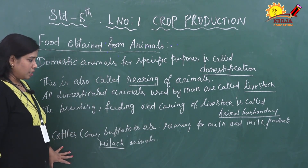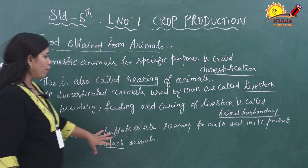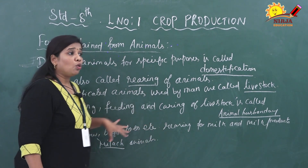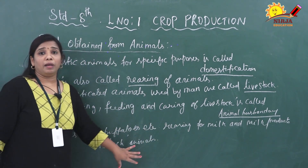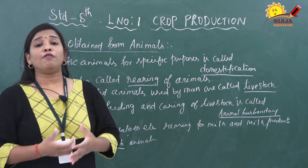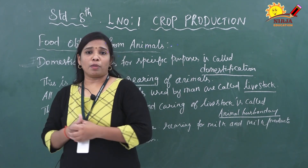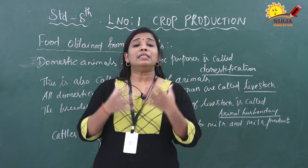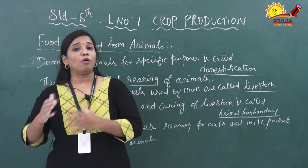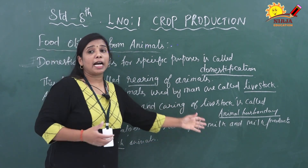In animal husbandry, cattle like cows and buffaloes are reared for milk and milk products — those animals are called milch animals. Similarly, sheep and goat are also reared for wool and meat purposes. Another category is poultry farming — poultry birds are reared for meat as well as eggs. That is called poultry farming, which also falls under the category of animal husbandry.